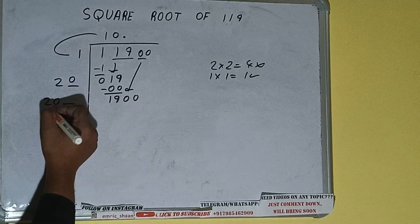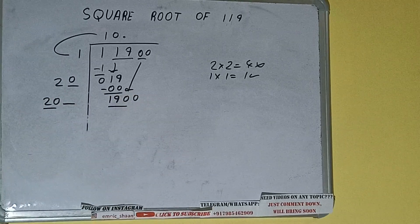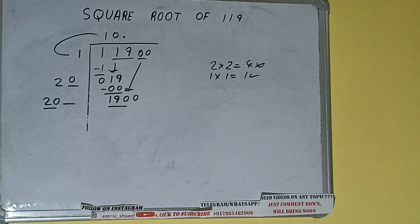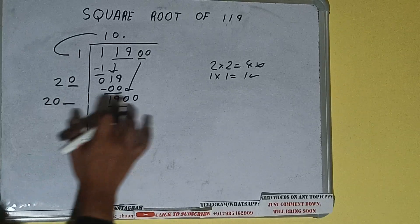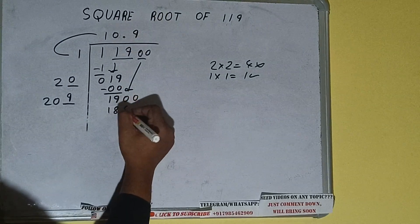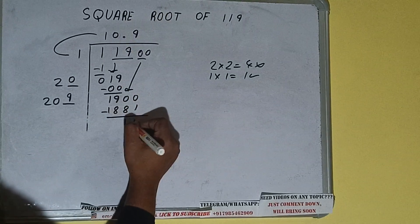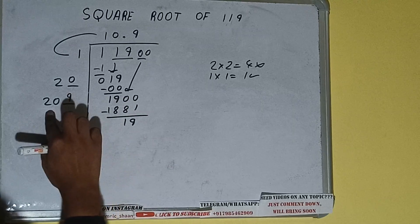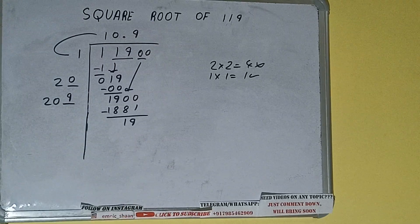Now we can compare this 20 with this 190. So 29 times is 180, so we can try 9 times. 9 here and 9 here. 1881 subtract, 19 will be left. 209 into 9 we did, so add both. 209 plus 9 will be 218, and 1 digit extra.